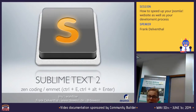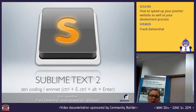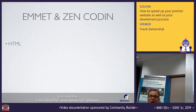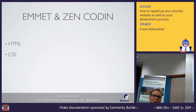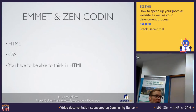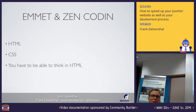Next thing: Sublime Text — a nice text editor. What I really fell in love with is Zen coding, or Emmet coding. It's a way of writing HTML and CSS in a very quick, very productive way. It has a disadvantage: you have to be able to think in HTML. If you can do this and know what you'll be doing, then there's a far, far faster way of writing code or HTML.